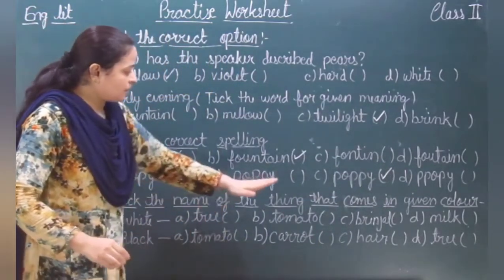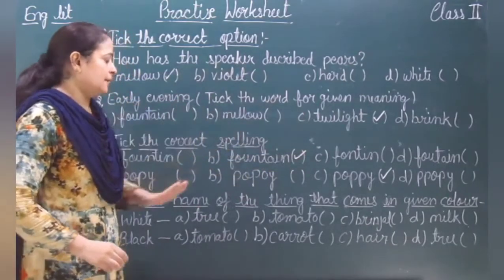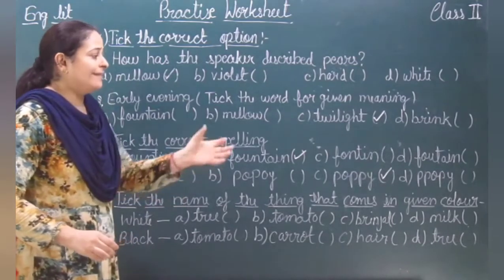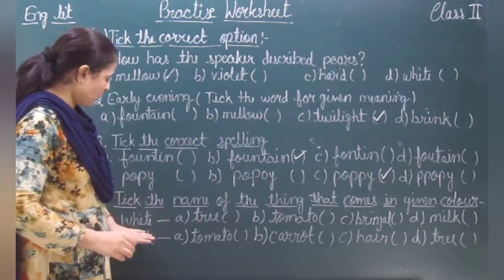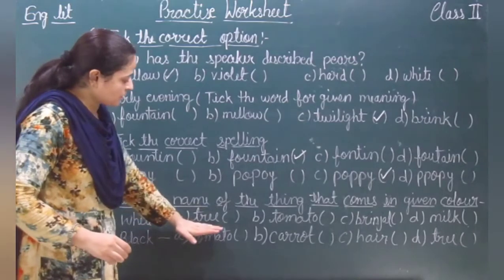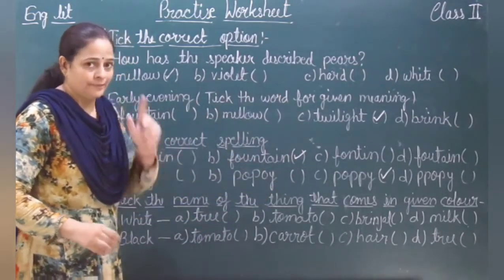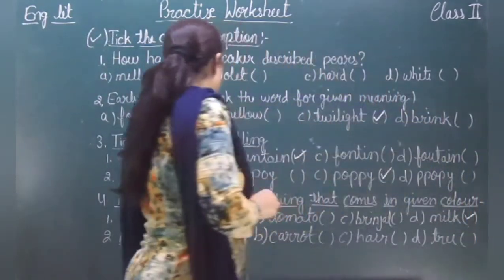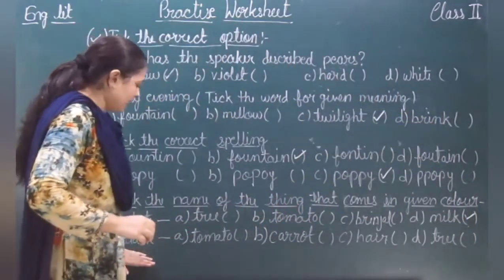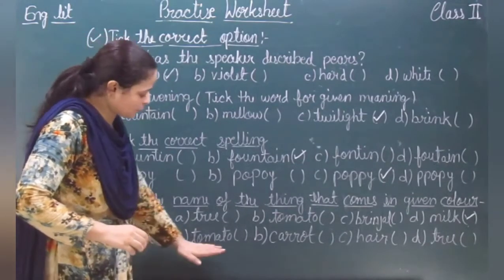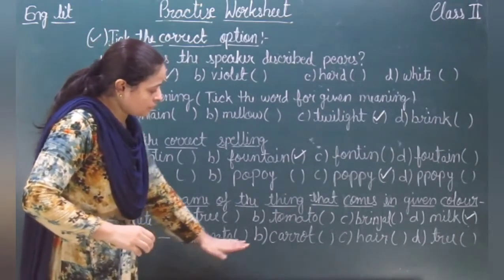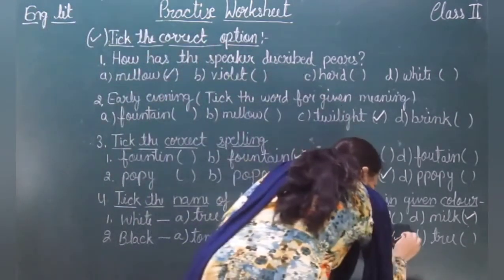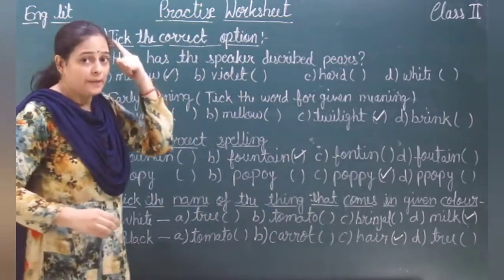Next, take the name of the thing that comes in the given color. The colors are given and we have to identify the thing of that particular color. White — options are tree, tomato, bringer, or milk. Milk is white. Next, black — options are tomato, carrot, hair, or tree. Hair is black.